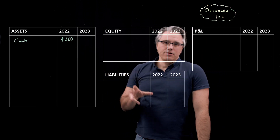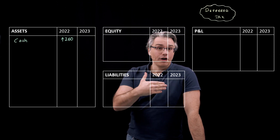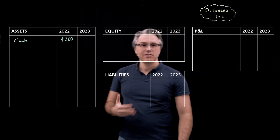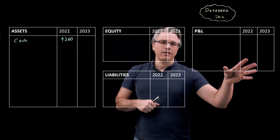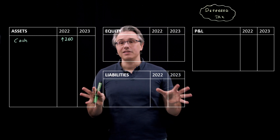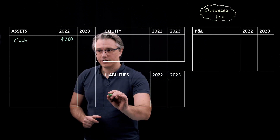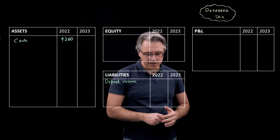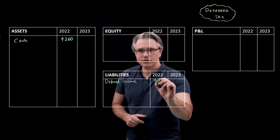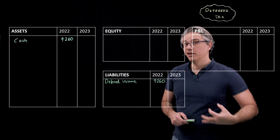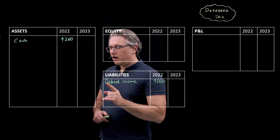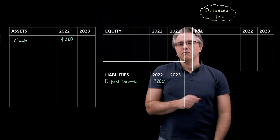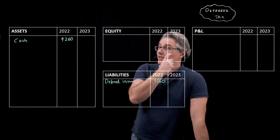However, the cash was received in 2022 for services which the company will render in the next year, 2023 — clients pay upfront for something they will receive in the subsequent year. This means the company cannot recognize the income or revenue yet; it has to treat it as deferred income. Deferred income is an item of liabilities — don't confuse this with deferred tax, which can also appear as a liability. The company says: I've received €260,000 from clients but haven't earned this money yet, so I can't recognize it in my P&L. I have a liability toward my clients to give them what they paid for.